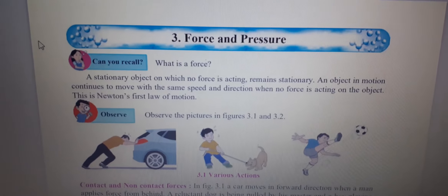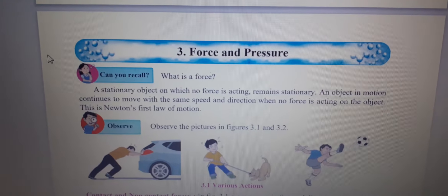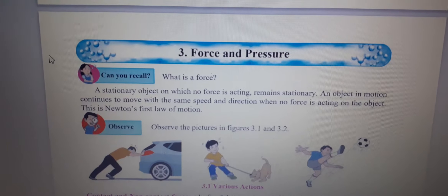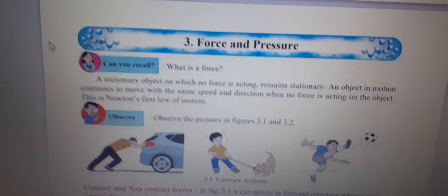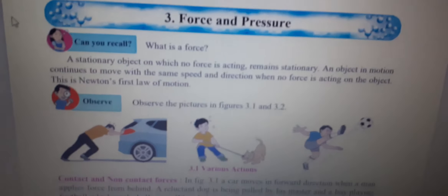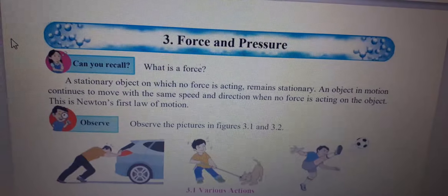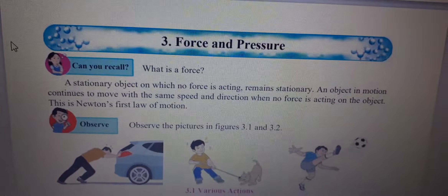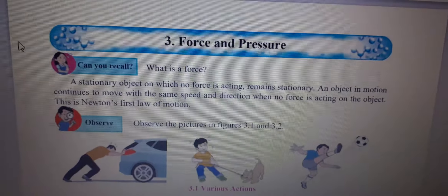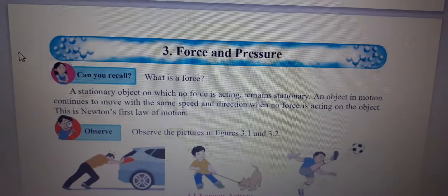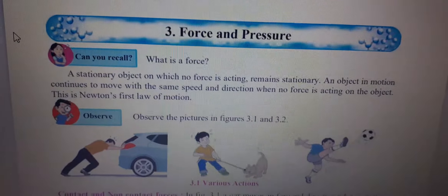This is Newton's first law of motion. A stationary object remains stationary only. An object in motion continues to move with the same speed and direction when no force is acting on the object. This is Newton's first law of motion.